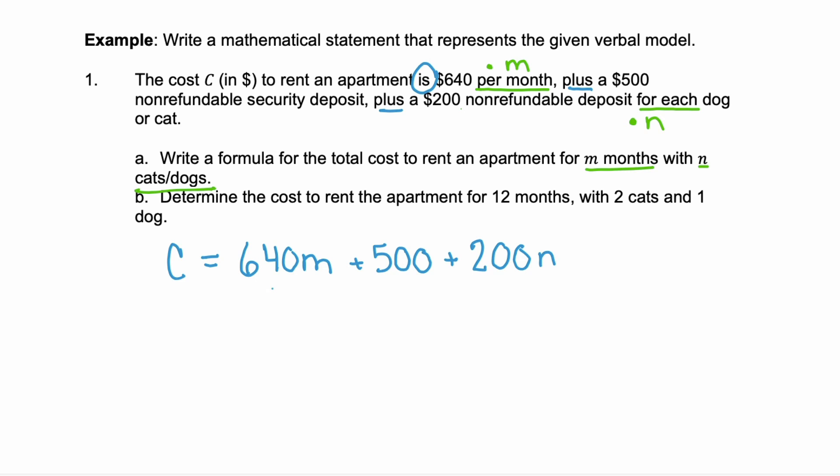Now, this statement is technically correct, but in math, we always put the variables first and in alphabetical order. So, $640 M plus $200 N and then that constant always goes on the end.